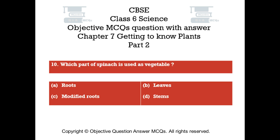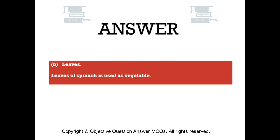Question number ten. Which part of spinach is used as a vegetable? Option A roots. Option B leaves. Option C modified roots. Option D stems. The right answer is option B — leaves. Leaves of spinach are used as a vegetable.